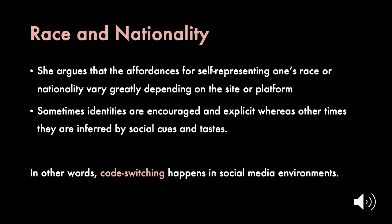She also describes how race and nationality play out in online spaces, arguing that affordances for self-representing one's race or nationality vary depending on the site or platform. Sometimes identities are encouraged and explicit — where you check a box — whereas others can be inferred. She talks about that in terms of cues and competencies: mentioning certain kinds of food or using certain language, like British slang, which people can somewhat choose how much they engage in. This comes down to questions of code-switching that can happen in social media environments, where people mark themselves as part of certain communities through the use of certain cues and codes.